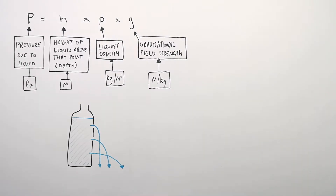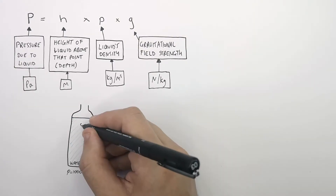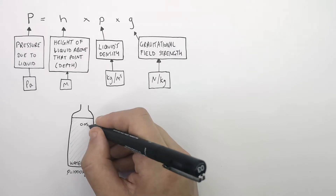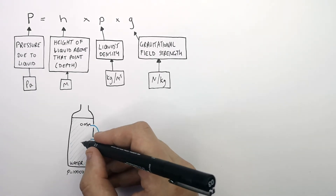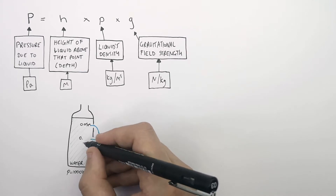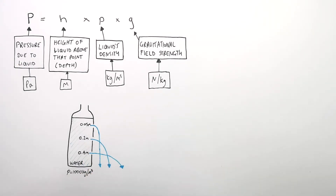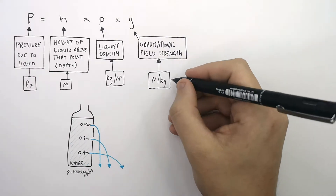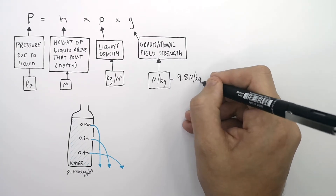The density of water is 1000 kilograms per metres cubed. The top hole is 0.05 metres below the surface of the water. The second hole is 0.2 metres below the surface of the water, and the bottom hole is 0.4 metres below the surface of the water. The gravitational field strength on Earth is 9.8 newtons per kilogram.